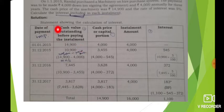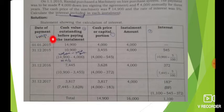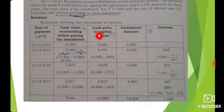We are going to show you the statement of the calculation of interest. We need to set up a table with 5 columns: date of payment, cash value outstanding before paying the installment, cash price or capital portion, installment amount, and interest.